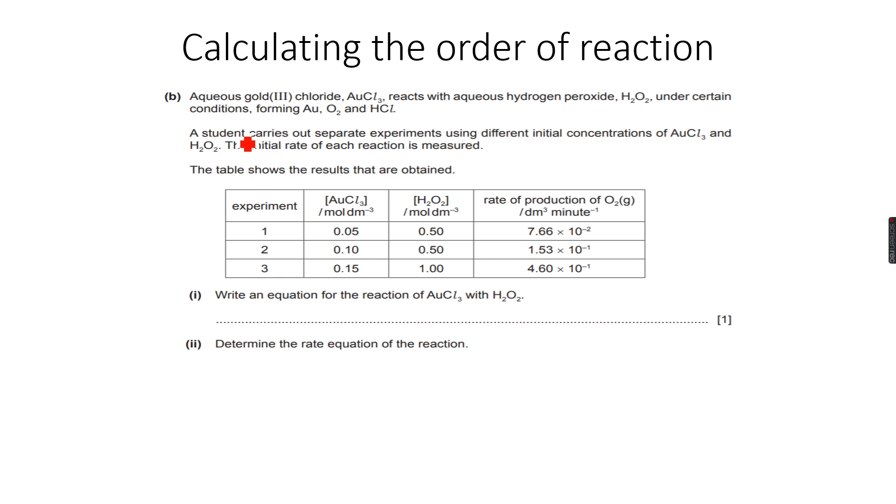Forming Au, O2, and HCl. So AuCl3 and H2O2 react. We don't know the exact ratios, we will figure that out, but they form these products in the reaction. A student carries out separate experiments using different initial concentrations of AuCl3 and H2O2. The initial rate of each reaction is measured. The table shows the results that are obtained.